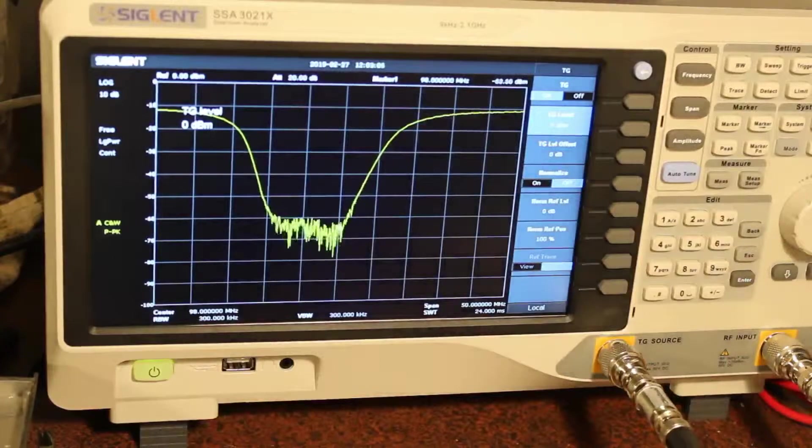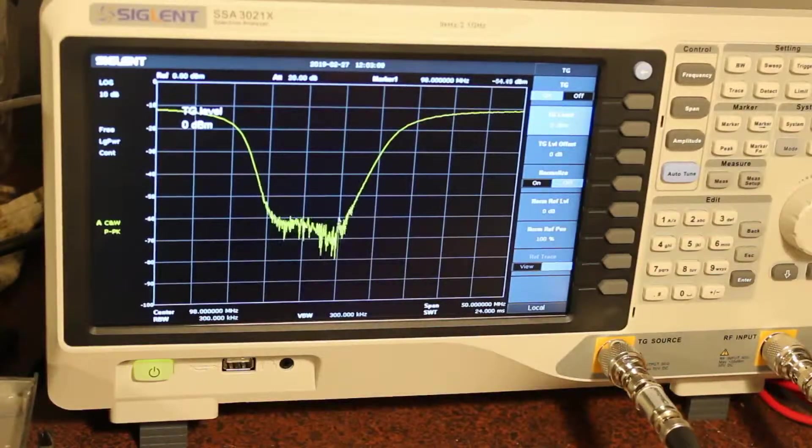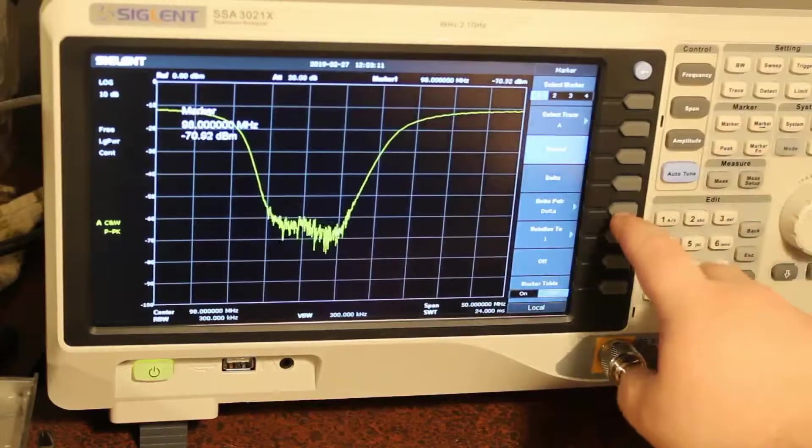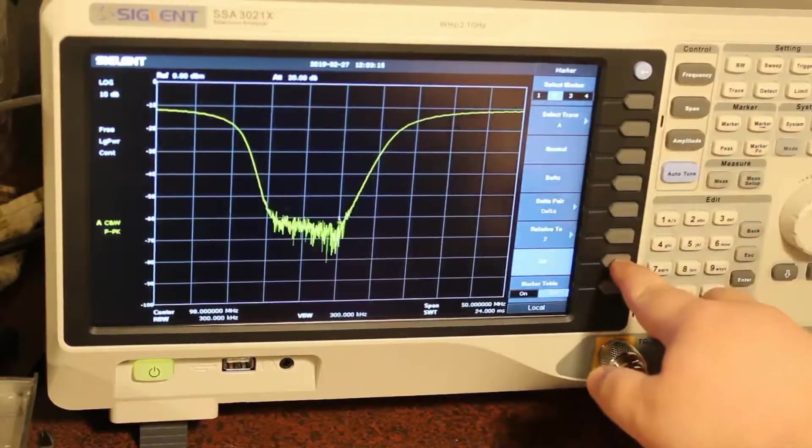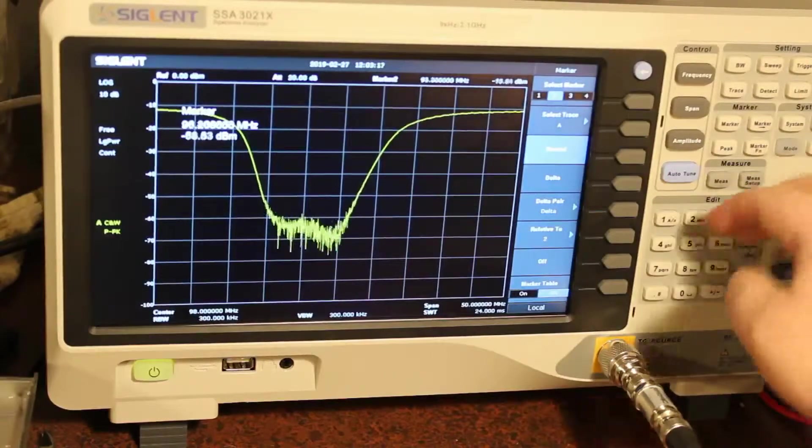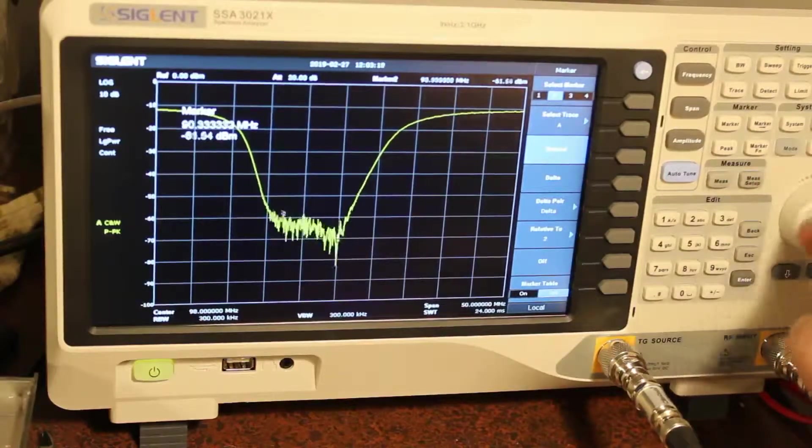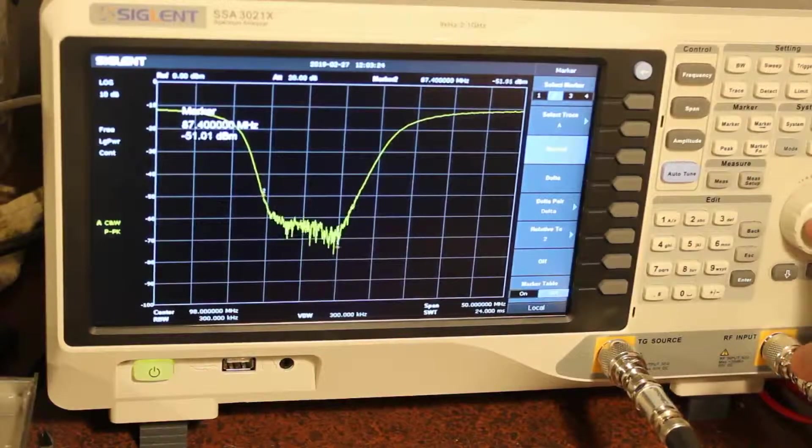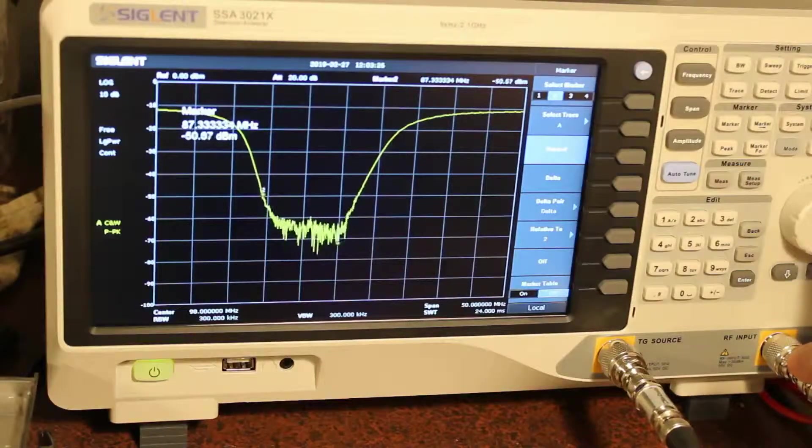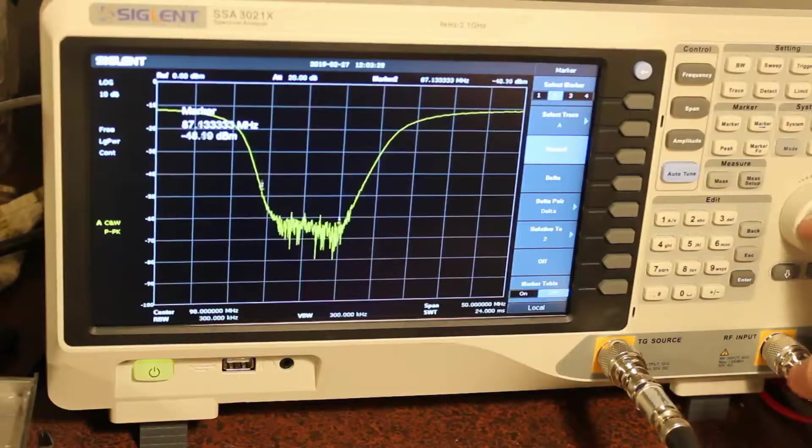I'm going to create another marker. So we're going to create a marker number two, turn it on, make it normal. And we'll check and see that the filter is about negative 40 dB down at about 87.4 MHz, which is the beginning of the broadcast band.